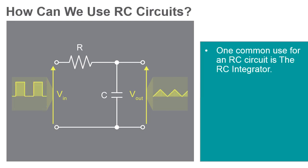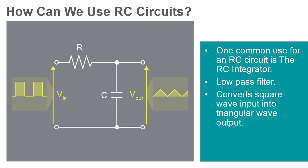One common use for an RC circuit is the RC integrator. The integrator is a low-pass filter circuit that converts a square wave input signal into a triangular waveform output.